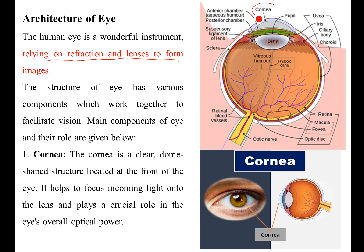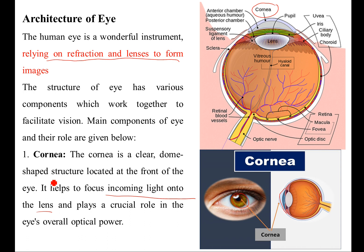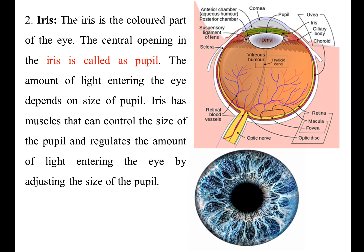The main component of the eye is the cornea. It is a clear dome-shaped structure located at the front of the eye. The cornea helps to focus incoming light onto the lens and plays a crucial role in the eye's overall optical power.